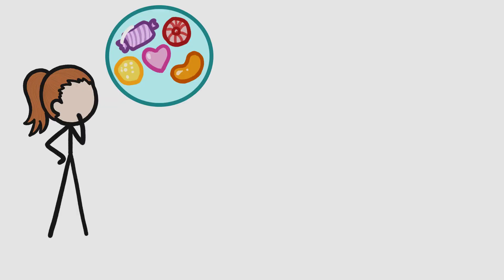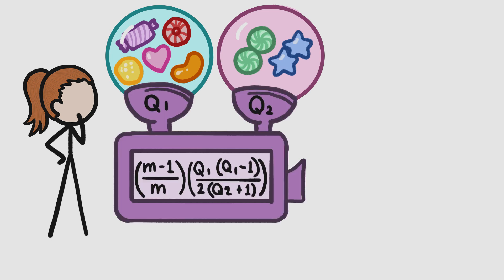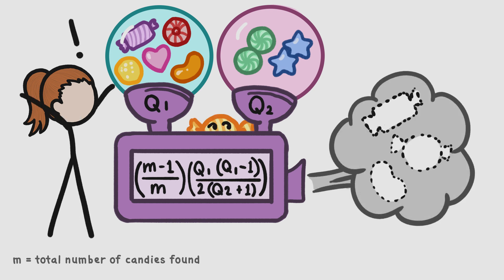Say there are five kinds of candies you've only seen once, and two you've seen twice. Plug these numbers into an equation along with some other info about how many candies you've found overall. And voila! There are probably three kinds still lurking down there, undiscovered.